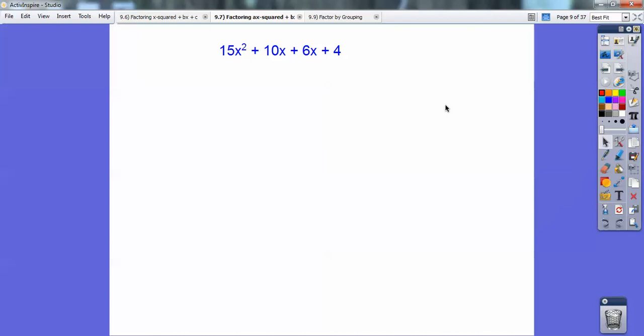So here we go. We're going to factor this by grouping. I'm going to group these two terms first together. What can you pull out of both those guys? I can pull a 5x out. I can pull a 2 out of both those guys. When I pull a 5x out of this guy, I get 3x + 2. When I pull a 2 out of this guy, I get 3x + 2.